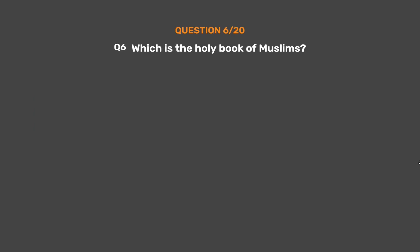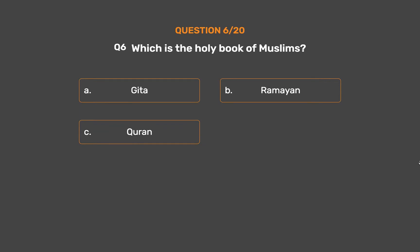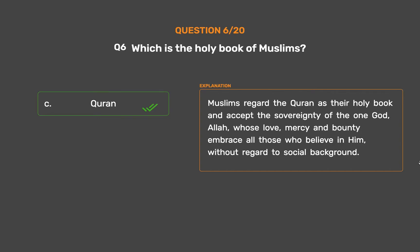Question 6: Which is the holy book of Muslims? Option A: Gita. Option B: Ramayana. Option C: Quran. Option D: Bible. The correct answer is Option C: Quran. Muslims regard the Quran as their holy book and accept the sovereignty of the one God, Allah, whose love, mercy and bounty embraces all those who believe in Him, without regard to social background.